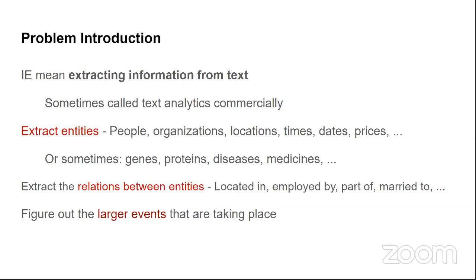One important problem under information extraction is identity linking. For example, if a text says 'Barack Obama, the president of the United States, declared an emergency,' and the next line says 'the president cited XYZ reasons,' you would want to link the identity of Barack Obama with 'the president.' Extracting the relations between identities is what we will be discussing in detail today.